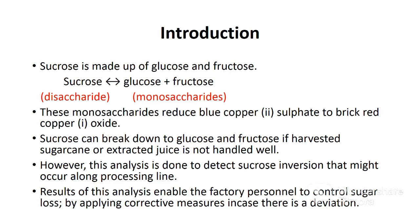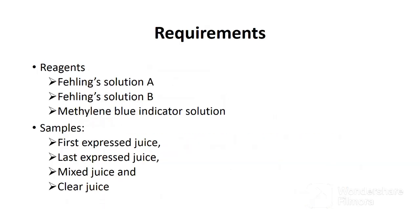Sucrose can break down to glucose and fructose if harvested sugarcane or extracted juice is not handled well. Remember, the aim of the sugar factory is to extract sucrose from sugarcane as received from the farm. However, this analysis is done to detect sucrose inversion that occurs along the processing line. Results from this analysis enable factory personnel to prevent or control sugar loss by applying corrective measures in case there is a deviation.